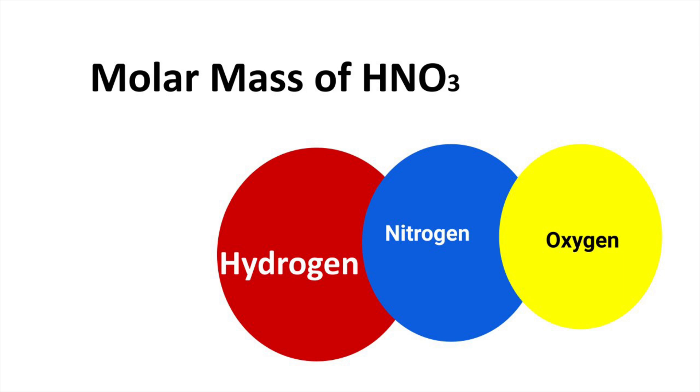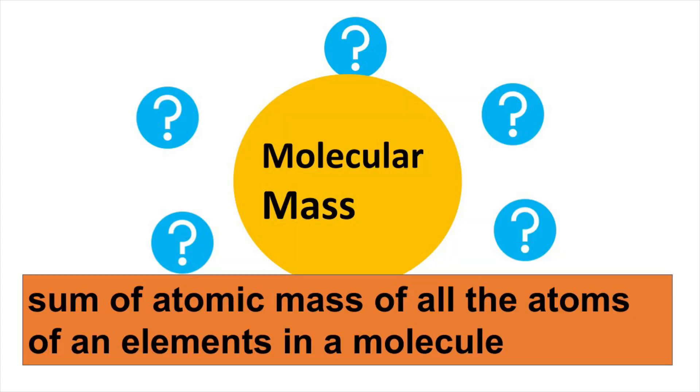To find molar mass, first we need to find the molecular mass of HNO3. Molecular mass is the sum of atomic mass of all the atoms of the molecule.